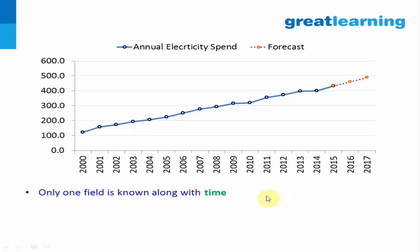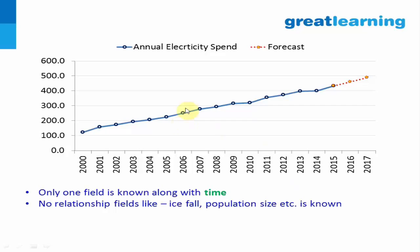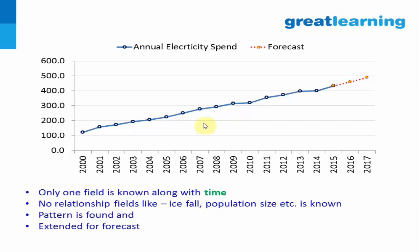You have only one field — annual electricity spend along with time: how much in 2000, how much in 2001, and so on. The electricity spend could also depend on rainfall or population size in that region, but you don't know those things. What you know is the annual electricity spend year over year. So you are discovering the pattern and extending it — if everything remains the same, this is how it should happen in 2016 and 2017. That's an example of time series forecasting.